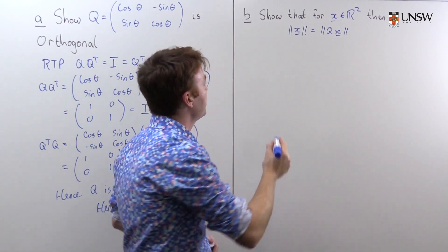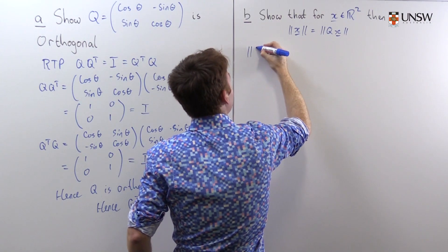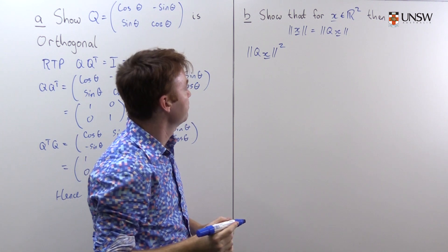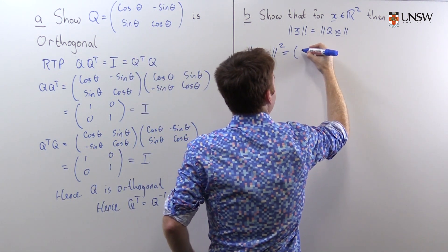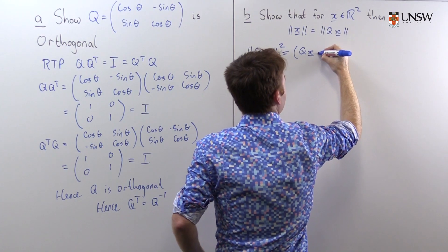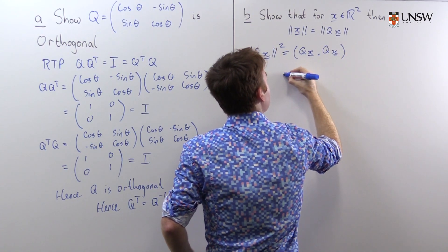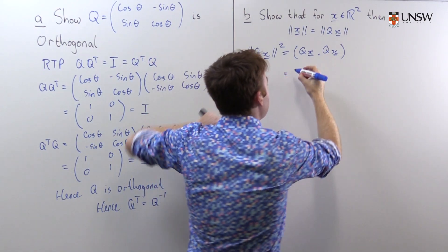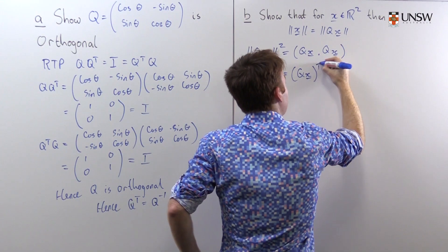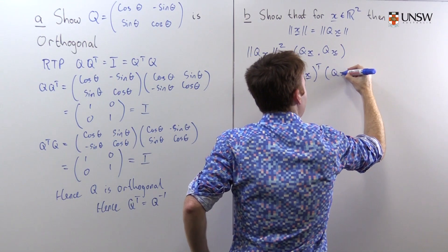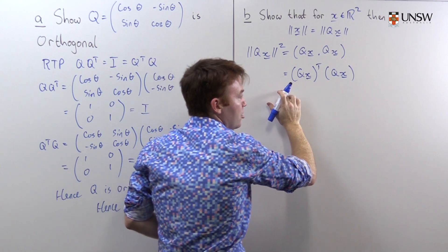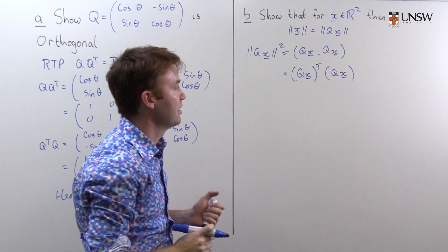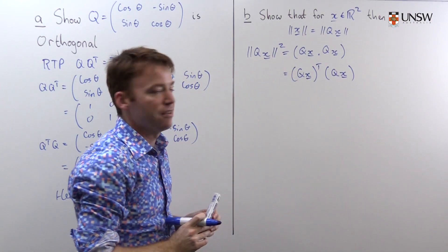Let's begin part B by taking the length ‖Qx‖ and I'll take the square of this length. The reason I do that is because I can then break this out as a dot product: Qx dotted with Qx. I can write this as a product of matrices — as Qx transpose times Qx. This is a row vector times a column vector, and you can multiply it out to recover the same quantity as given by the dot product.